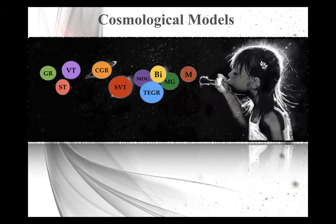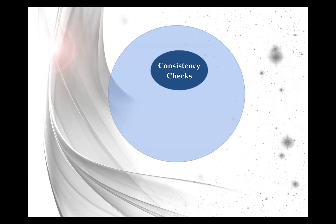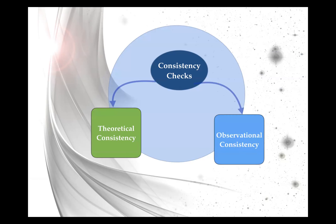There are many different models and effective field theories — beyond these two examples, one could consider models where dark matter and dark energy interact, or include many more degrees of freedom. Given this proliferation of models, one needs to perform consistency checks and put some constraints on them.